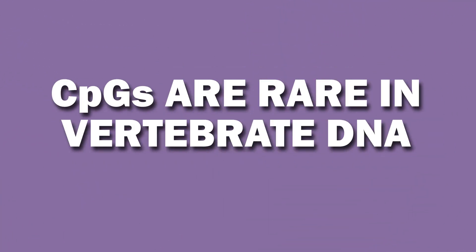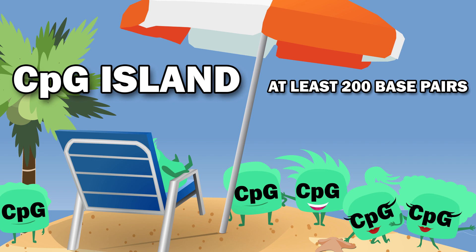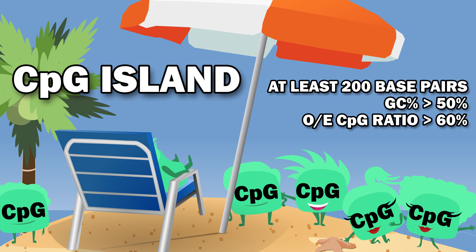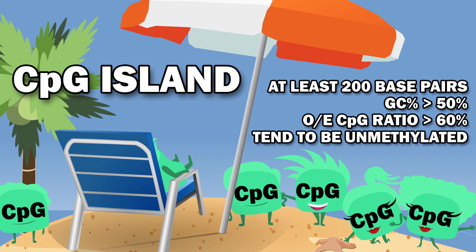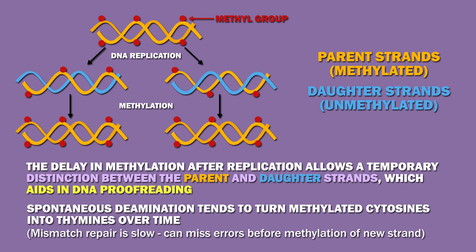So CpGs are rare in vertebrate DNA. However, there are areas of the genome that have what are called CpG islands. In general, these are defined as regions of at least 200 base pairs with a GC percentage greater than 50% and an observed-to-expected CpG ratio exceeding 60%. Unlike the otherwise heavily methylated genome, CpG islands tend to be unmethylated. Although methylation allows a distinction between the parent and newly synthesized strands, which aids in DNA proofreading, spontaneous deamination tends to turn methylated cytosines into thymines over time.